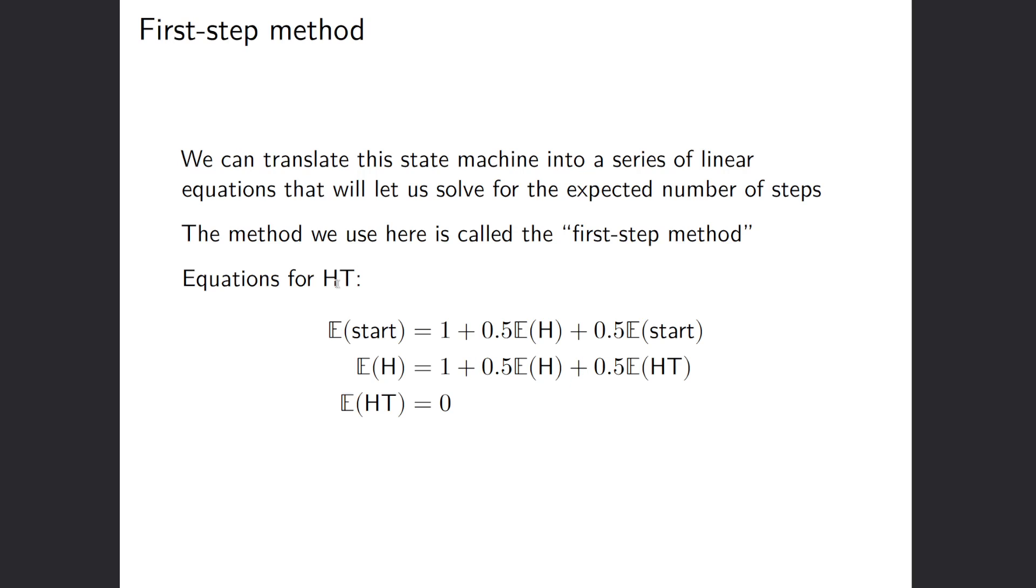So for instance, for heads tails, for the state machine that we had before, the expected value, this is what this E means is expected value. You could even say expected number of steps or expected number of flips. From our start state, well, we have to add one. And then there's a 50% chance that we go to the head state and a 50% chance that we stay in the start state. So if we flip the head, we go to the head state. We flip the tails and we stay in the start state. So that's what this first equation means.